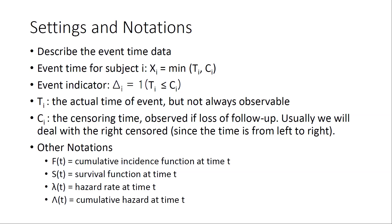A subject may quit a study without notifying you, or at the end of follow-up you may not observe an event. For example, if your study can only follow subjects for five years, and at the end of five years there are still subjects who have not died, those five years are not their time to mortality — this is called the censoring time. At the end of five years the subject is still in the risk set, still subject to the risk of death, so C_i equals five years — that C_i is called the censoring time.